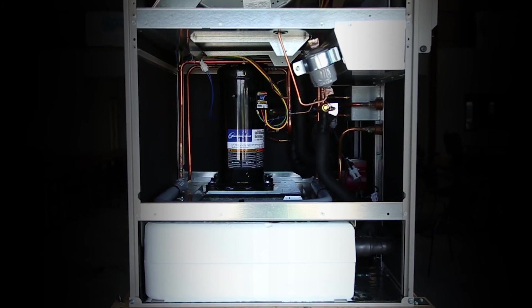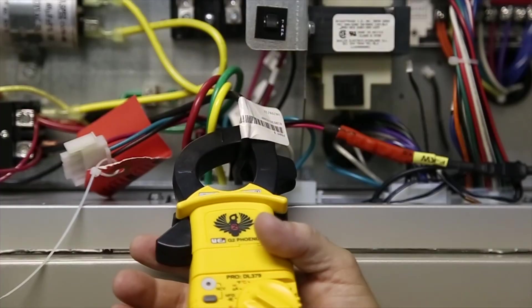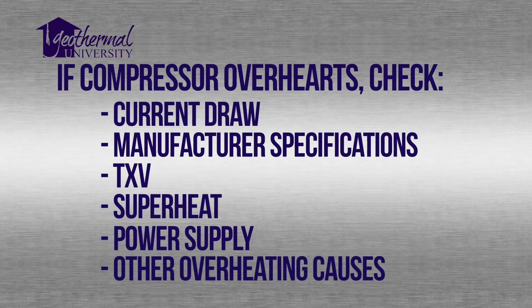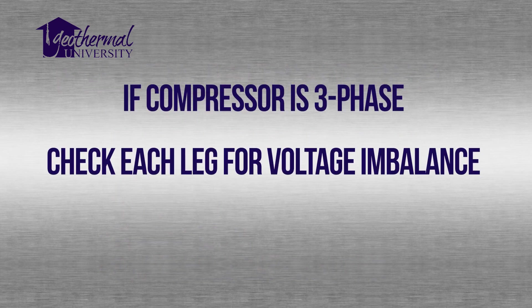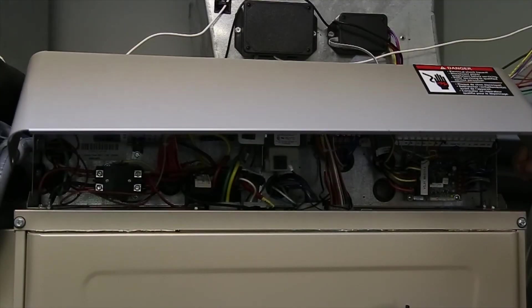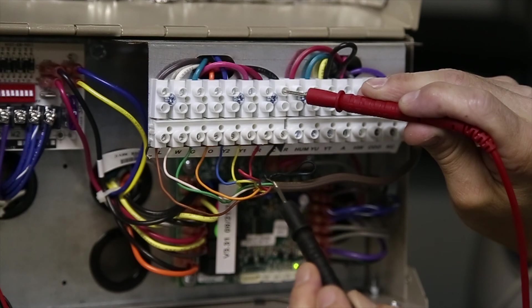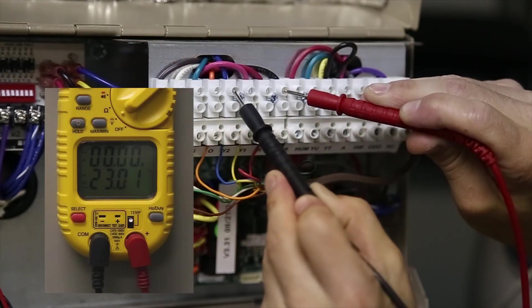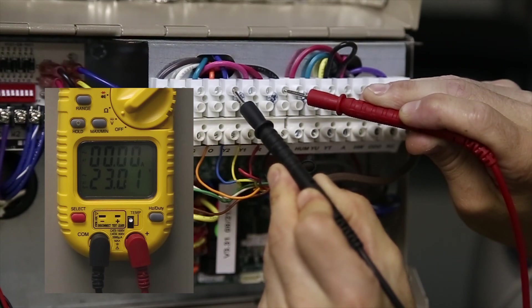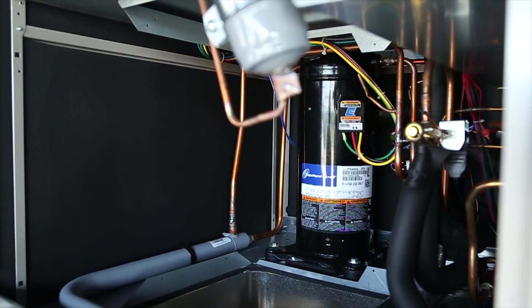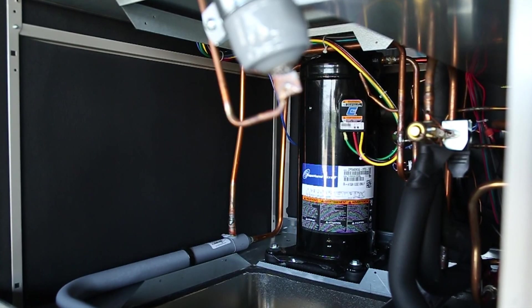If the compressor starts and runs, other components should be checked. If the compressor overheated, you must find the cause of the overheating. You should check the current draw, compare to manufacturer's specifications, check the TXV, superheat, power supply, and anything else that can cause a compressor to overheat. If the compressor is three-phase, it is important to measure each leg to check for voltage imbalance. If the compressor is two-stage, you should confirm the unit is going into second stage. The components for shifting to high stage vary from each manufacturer. In this model, 24 volts AC is supplied to the second stage rectifier plug from the ECM board. With the rectifier plug removed, you should read 15 to 24 volts DC on the plugged female receptacle. Remember, fewer than 5% of compressors fail due to factory defects. A careful inspection of the complete system must be made, otherwise the replacement compressor will also fail. Thanks for watching Geothermal University.